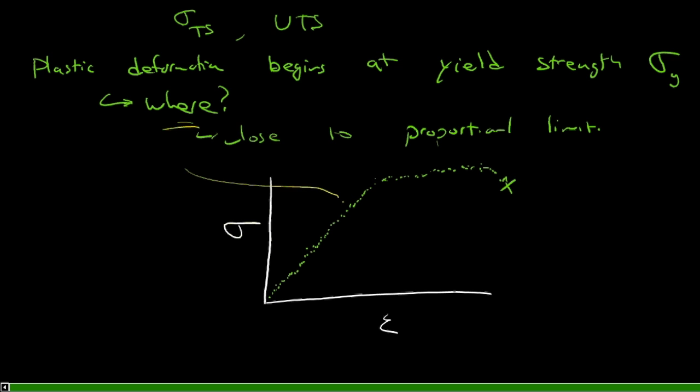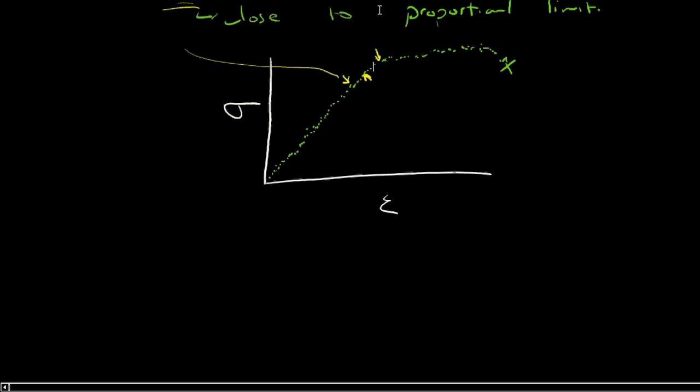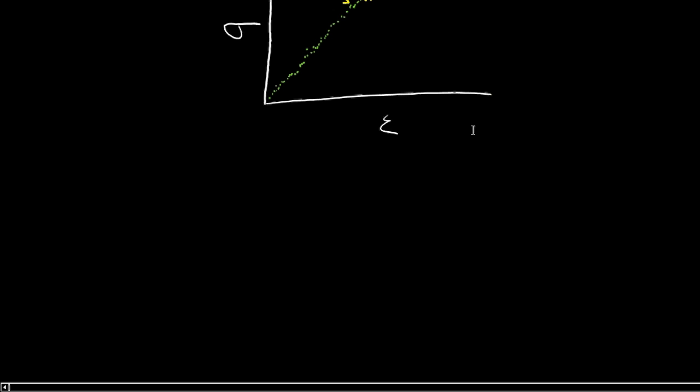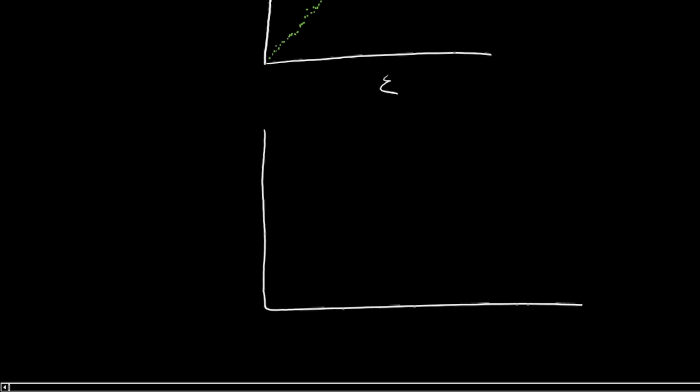So when you've got data that looks like that, where was it? Where was that deformation? Where was the proportional limit, in fact? Is it here? Is it here? Different people would identify different places, and so there's some ambiguity there. And it's quite difficult to determine it in a fashion that we can easily repeat as engineers in different places in the world, in different labs, with different equipment.